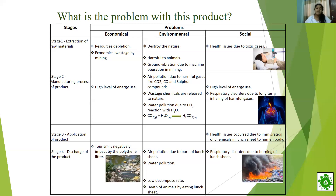In stage three, health issues occur due to migration of chemicals in lunch sheets into the human body, which is the social issue. In stage four, tourism is negatively impacted by polythene litter. It causes air pollution due to burning of lunch sheets, water pollution, a low decomposition rate, and death of animals by eating lunch sheets.